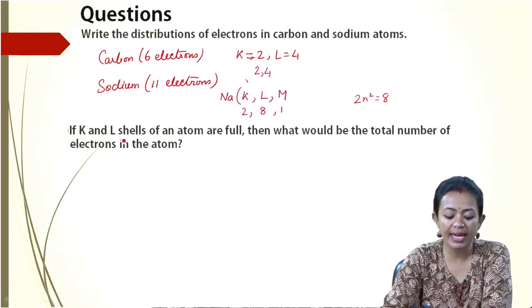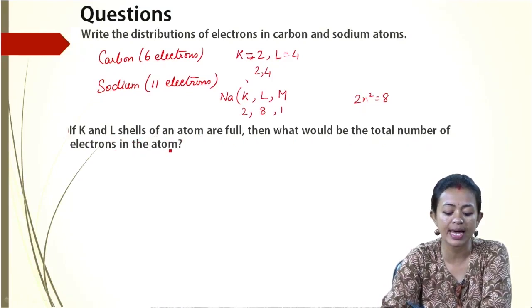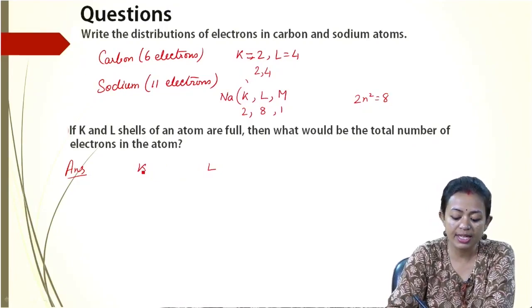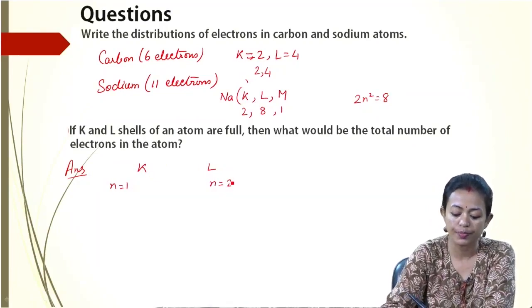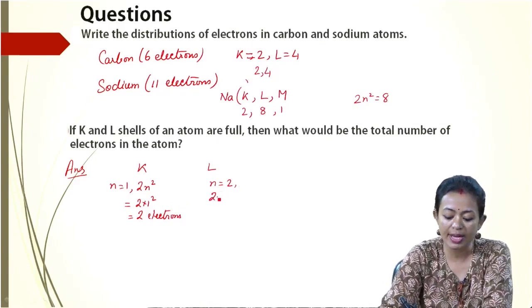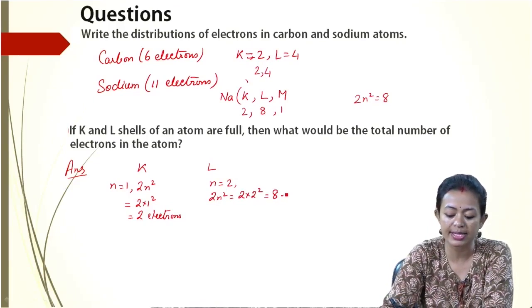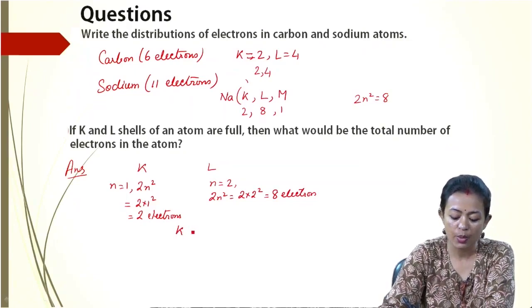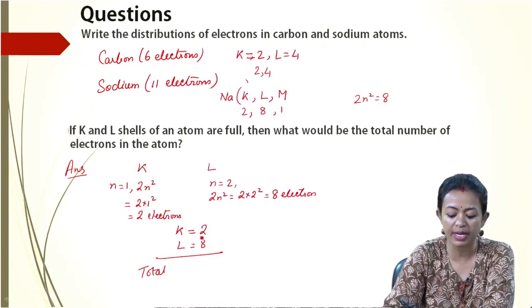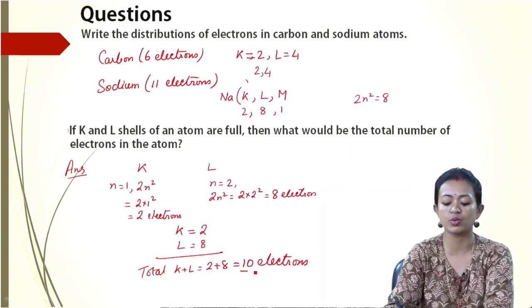The next question: if K and L shells of an atom are full, what would be the total number of electrons in the atom? That's a very interesting question. K shell has n equal to 1, so twice n squared is 2 into 1 squared, which equals 2 electrons. For L shell, n equal to 2, so twice n squared is 2 into 2 squared, which equals 8 electrons. So the total number of electrons is K plus L, which is 2 plus 8, that is 10 electrons.